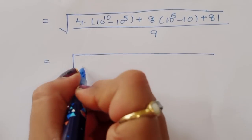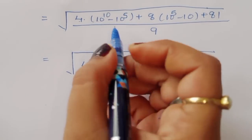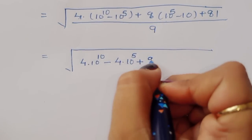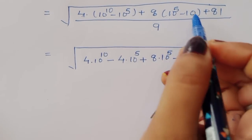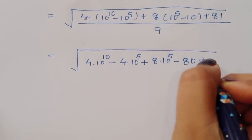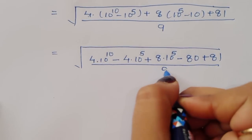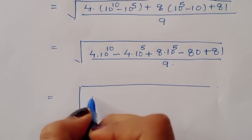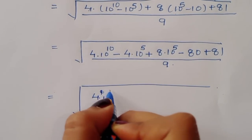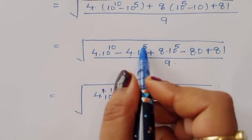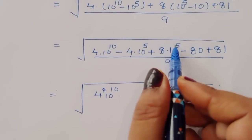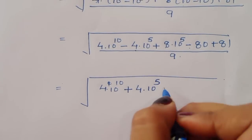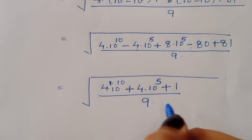Equal to: 4 into 10 raise to 10, minus 4 into 10 raise to 5, plus 8 into 10 raise to 5, minus 8 into 10 that is 80, minus 80, plus 81, divided by 9. Now 4 into 10 raise to 10, minus 4 into 10 raise to 5, plus 8 into 10 raise to 5, so 8 minus 4 is 4, so we can write plus 4 into 10 raise to 5, minus 80 plus 81, so plus 1, divided by 9.